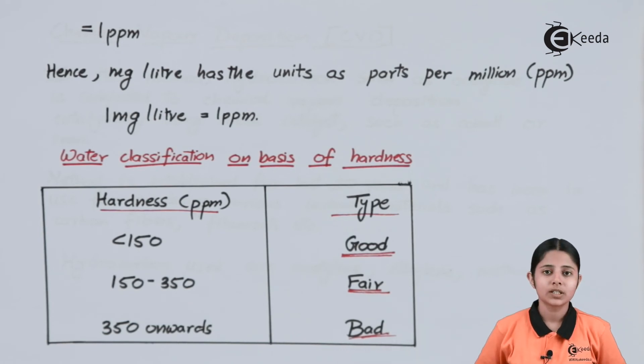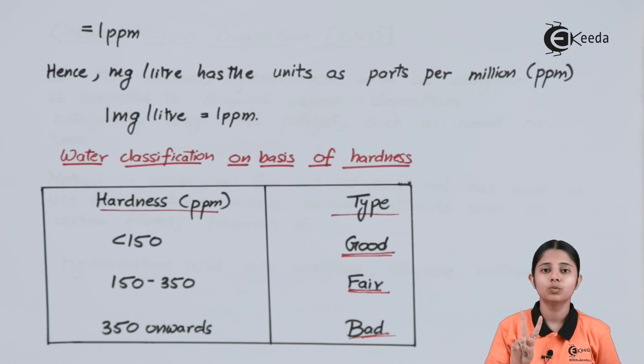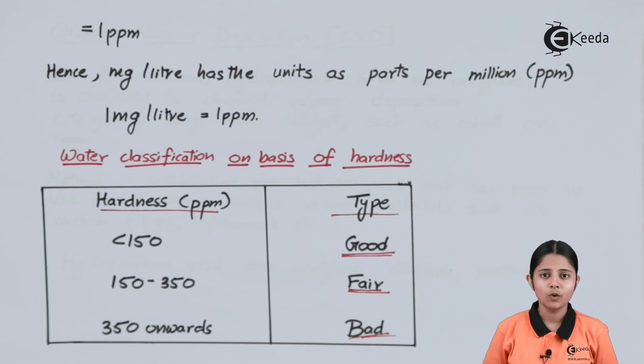In today's session we studied about the units of hardness of water. We studied all the units, but in detail we studied the two most important units: PPM and mg per liter. We also studied how PPM and mg per liter correspond to the same numeric value but have different unit names. Thank you so much for watching this video. Stay tuned to eKira and subscribe to eKira.